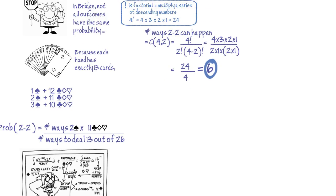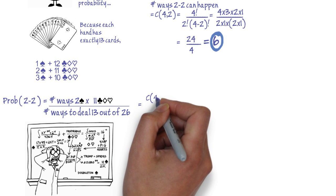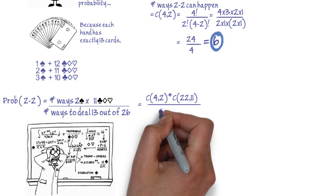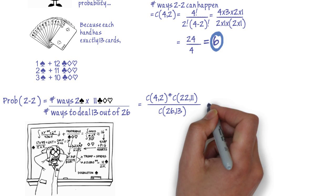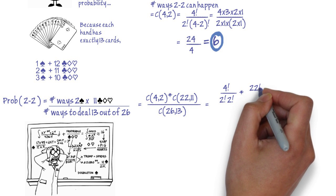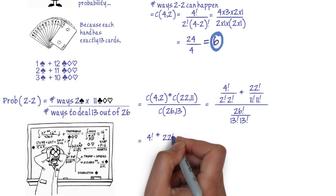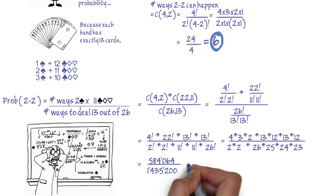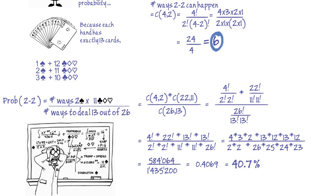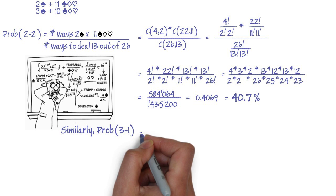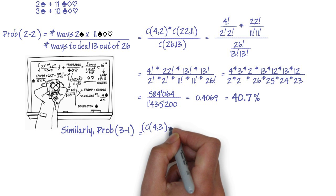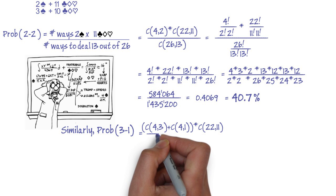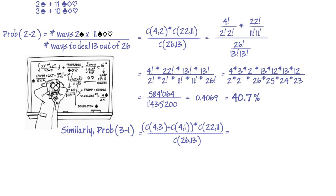Now we can calculate the correct probability for a 2-2 distribution. It is 4 choose 2 times 22 choose 11, divided by 26 choose 13. After simplification, we get just over 40%, instead of the previous 37.5%. Similarly, the probability of a 3-1 distribution becomes (4 choose 3 plus 4 choose 1) times 22 choose 11, divided by 26 choose 13, which equals 49.7%.